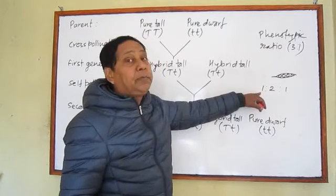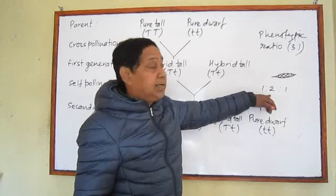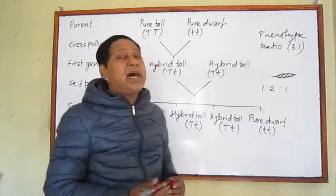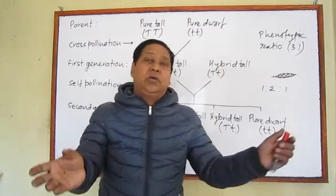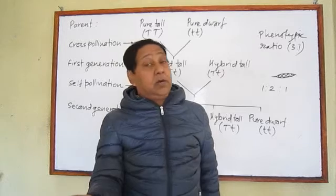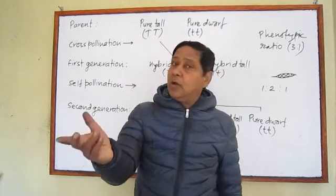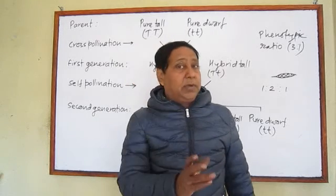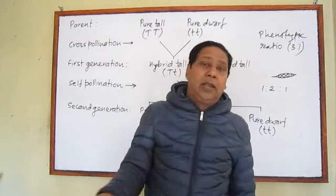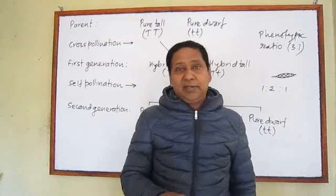Pure tall is 1 part, hybrid tall is 2 parts, and pure dwarf is 1 part. Therefore, in the second generation, the phenotypic ratio is 3:1 (tall to dwarf) and the genotypic ratio is 1:2:1 — pure tall to hybrid tall to pure dwarf.